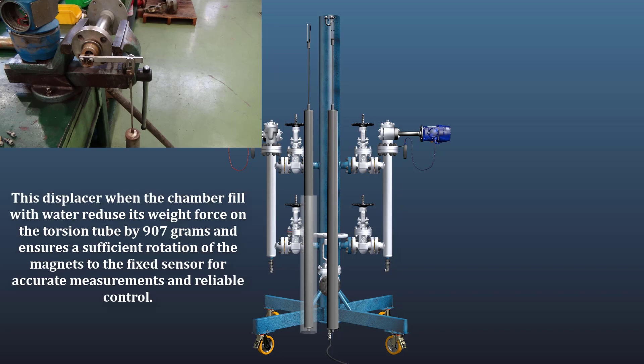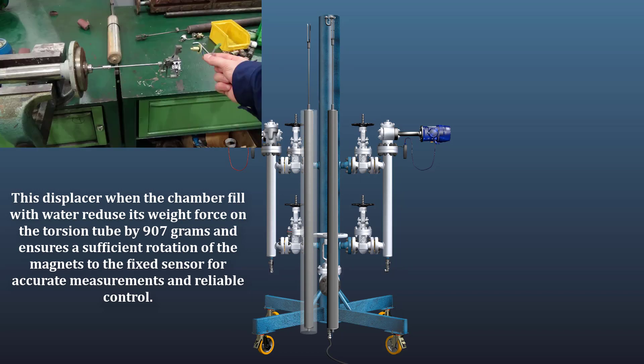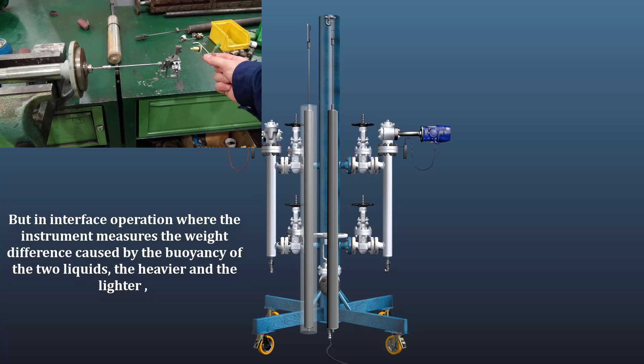It is floating. This displacer when the chamber fills with water, reduces its weight force on the torsion tube by 907 grams, and ensures a sufficient rotation of the magnets to the fixed sensor for accurate measurements and reliable control.